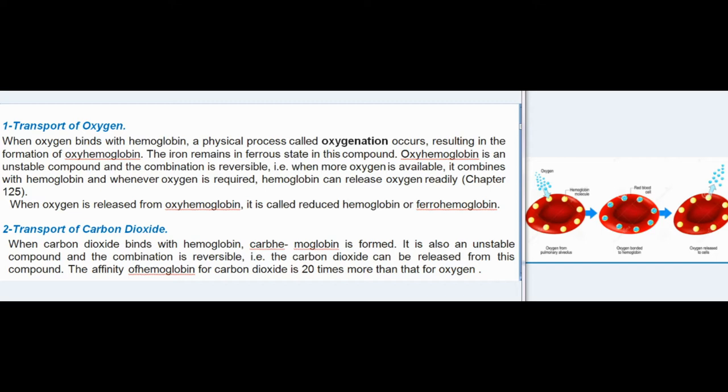Oxygenation results in the formation of oxyhemoglobin; the iron remains in ferrous state in this compound. Oxyhemoglobin is an unstable compound and the combination is reversible — when more oxygen is available it combines with hemoglobin, and whenever oxygen is required, hemoglobin can release oxygen readily.